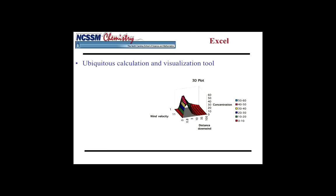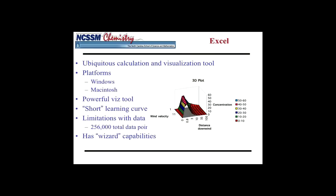A little bit about Excel. We're not going to spend much time on this. It's a pretty ubiquitous tool. Everybody has it. Ubiquitous means everybody has it. It's a good calculation and viz tool. You did this visualization when you did the Gaussian Plume model. It runs on both Windows and Macs. It's a pretty powerful viz tool. It has a relatively short learning curve. One of the limitations of Excel is you can only have about 250,000 total data points. You can't load really big data sets into Excel. So that's a limitation. And it does have some wizard capabilities that will guide you through the visualization process to try to make things a little bit easier on you.